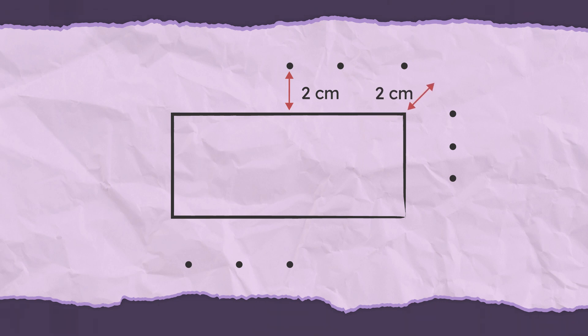Be careful at the corners. If we drew a 90 degree angle, then the point would be further than 2 cm from the rectangle.